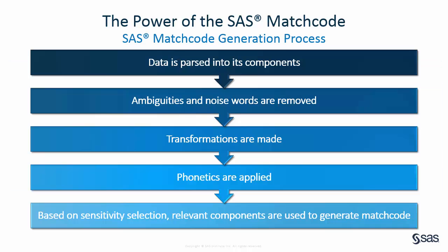Represented here is the high-level process of generating a SAS match code. First, the matching engine parses the data into its components. For example, in the case of name data, the string is parsed into the tokens of name prefix, given name, middle name, family name, and name suffix.